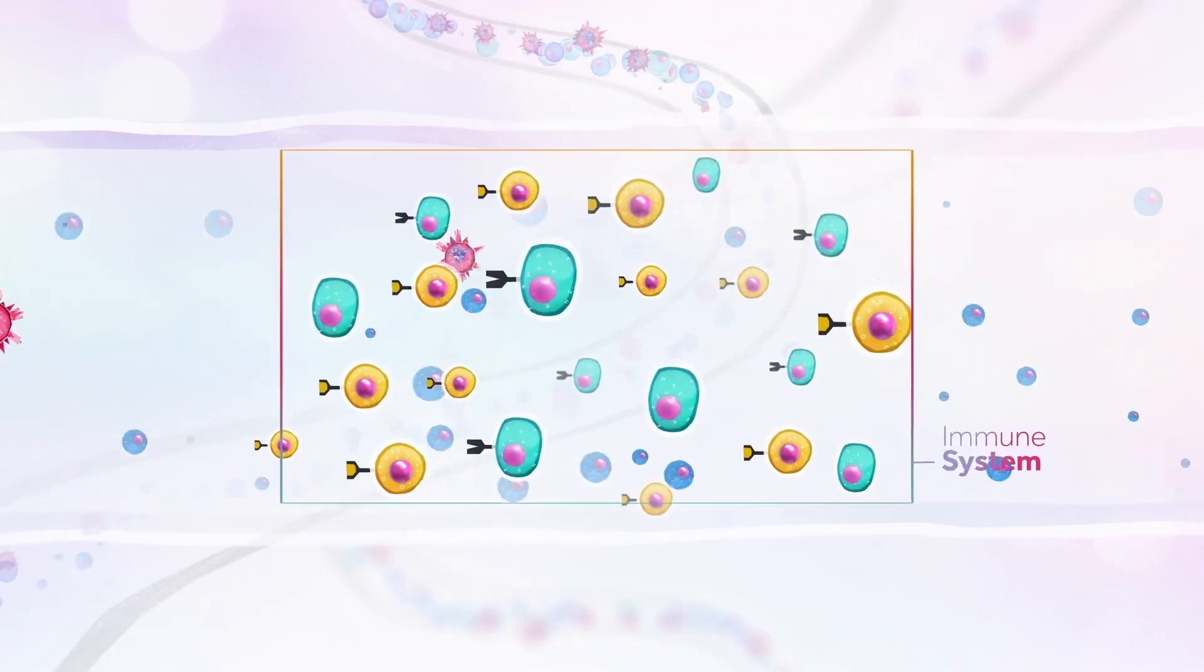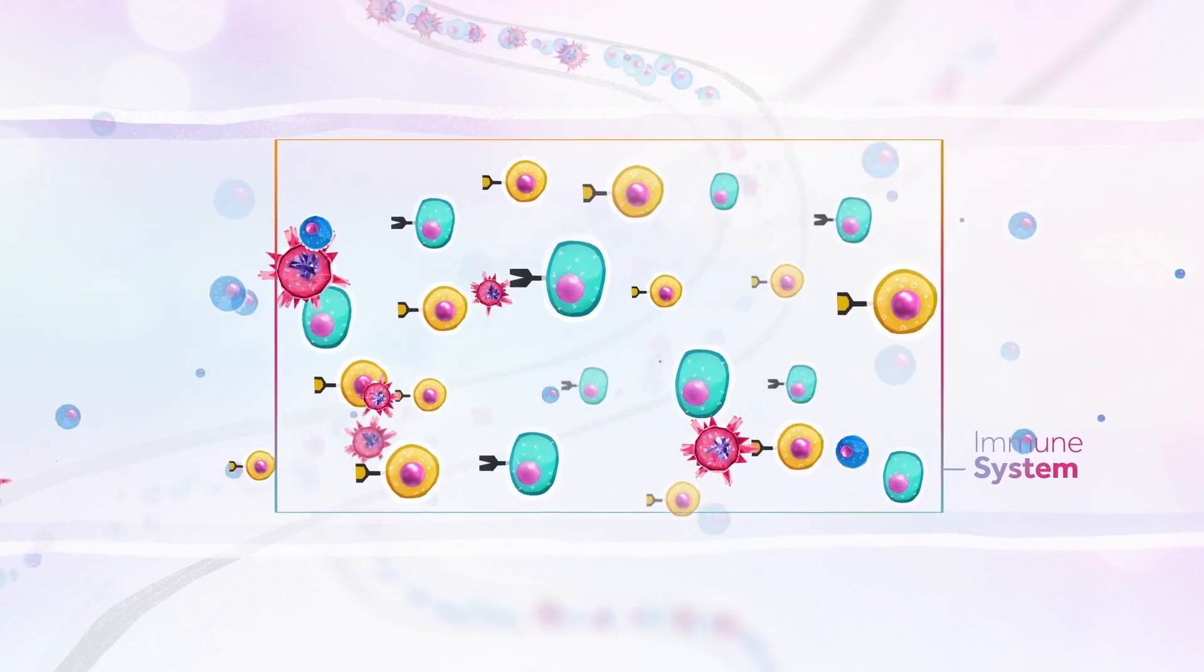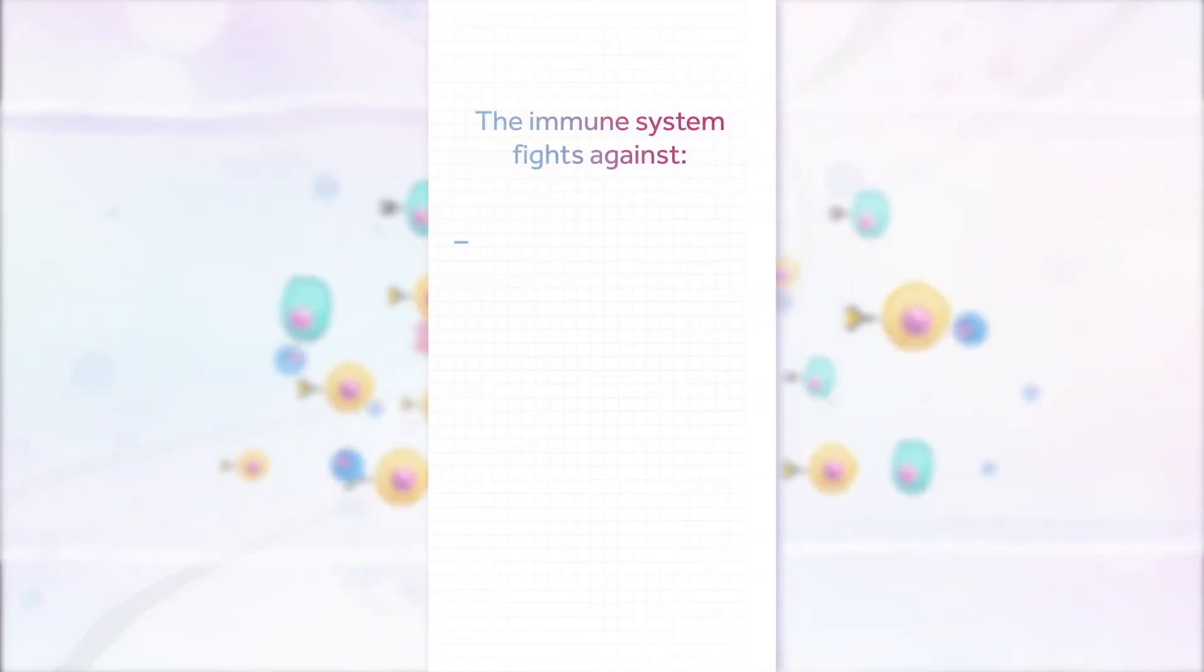Our body cells are continuously monitored by our own immune system. This system aims to detect and eliminate all potential aggressions to our body, like infections by bacteria or viruses or the presence of cancer cells.